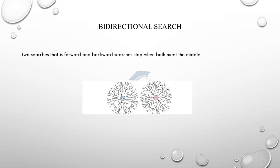Bidirectional search: we do a forward search from the root node toward the goal, and a backward search from the goal node toward the root. The two searches meet at a middle point - an intersection node. We then choose the path through that intersection node. The advantage of bidirectional search is memory efficiency and fast search with time savings. The disadvantage is that the goal node must already be known to conduct the backward search - that is the drawback.